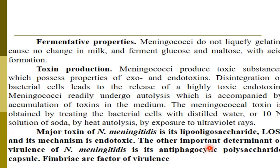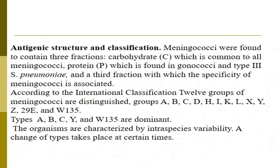The other important determinants of virulence of Neisseria meningitidis are its antiphagocytic polysaccharide capsule and fimbriae. Regarding the antigenic structure and classification, we can classify meningococci serologically into groups A, B, C, D, H, I, K, L, X, Y, Z, 29E, and W135.